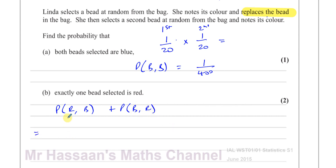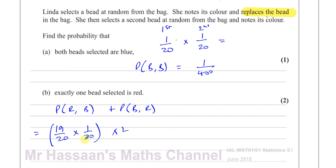The probability of picking a red is 19/20, and the probability of picking a blue is 1/20, because you're putting the red back. This gives us 19/20 × 1/20 plus 1/20 × 19/20, which is the same as that times 2. Cancelling gives 19/200, so there's the answer to part B.